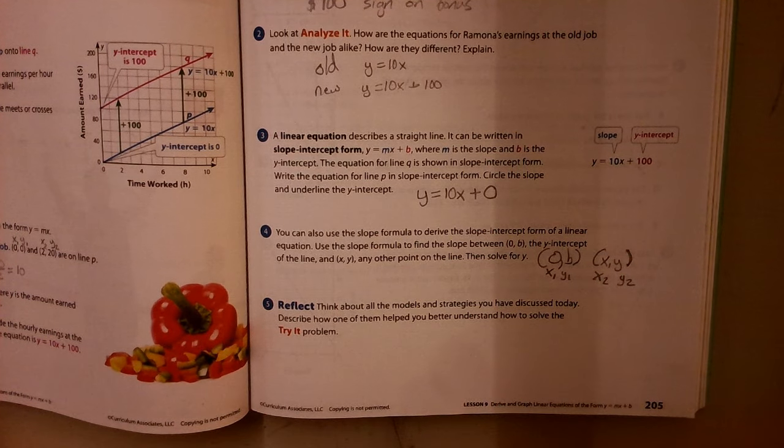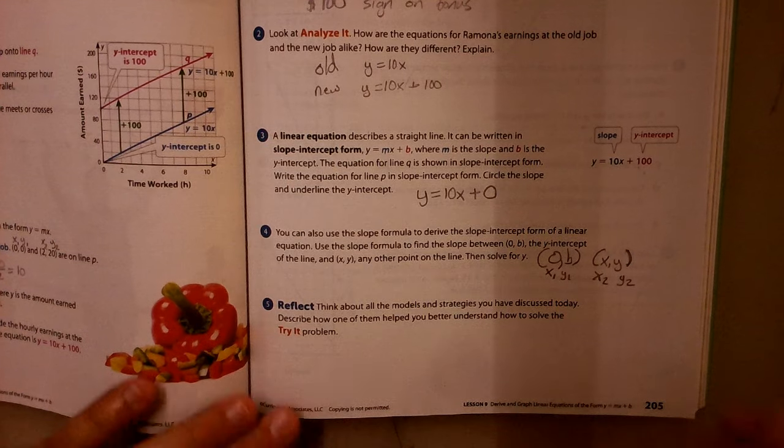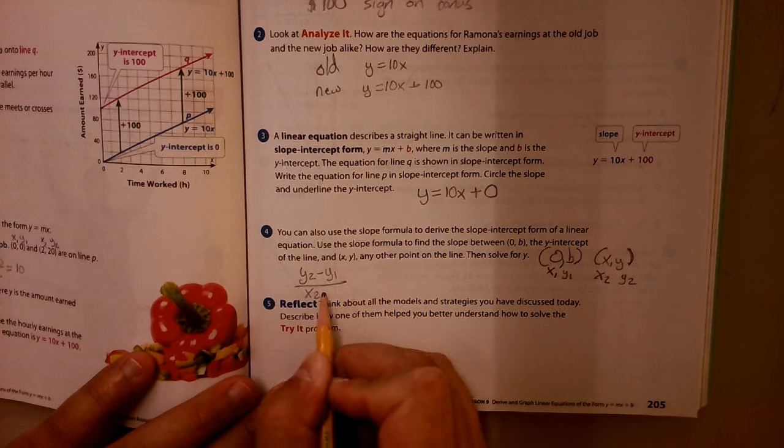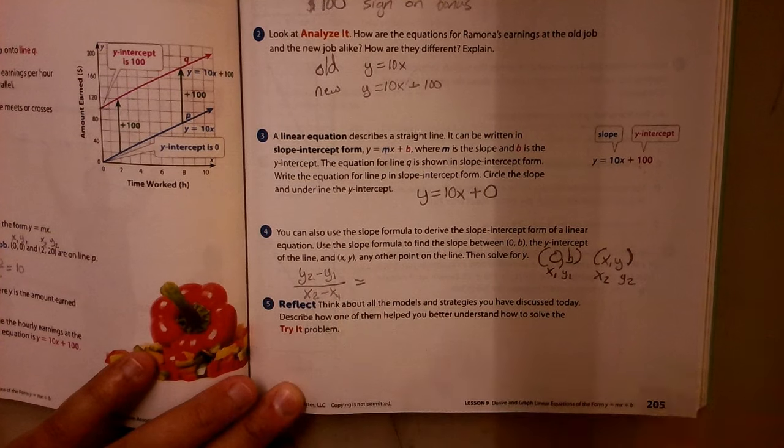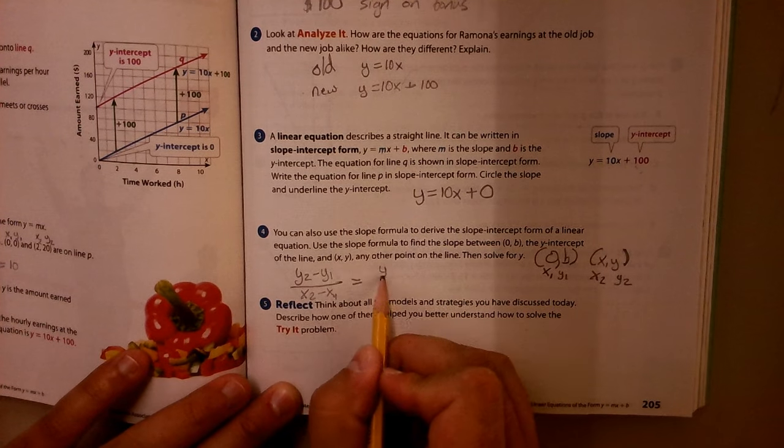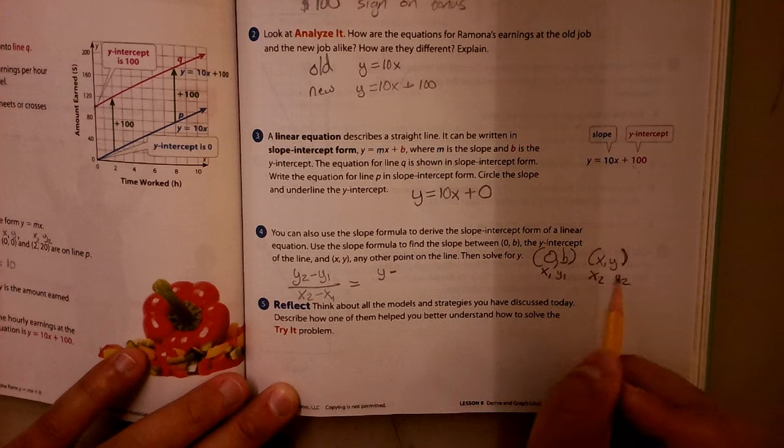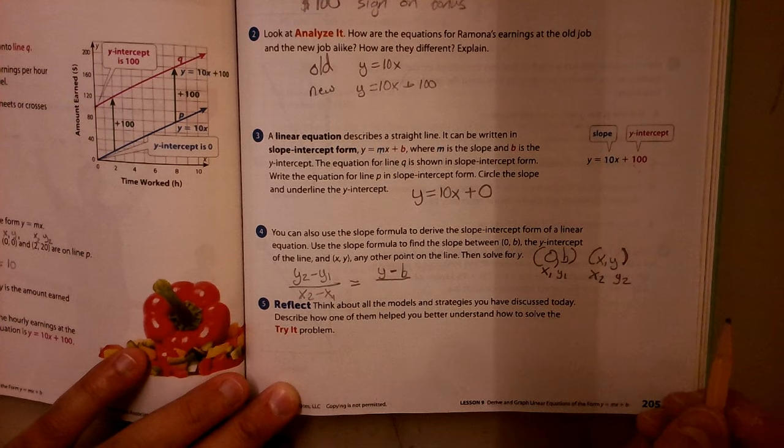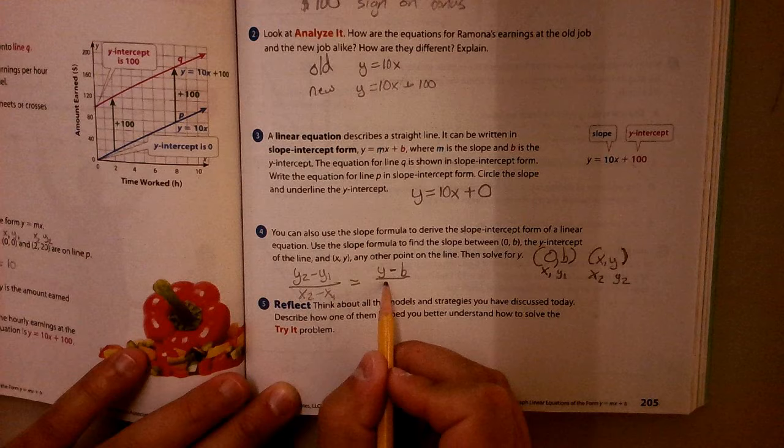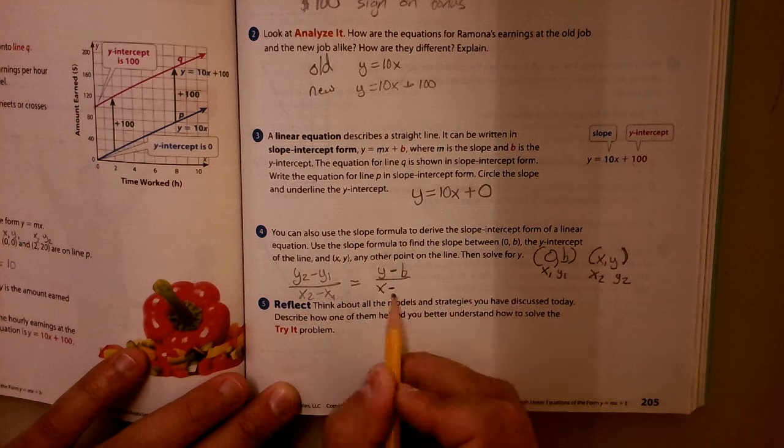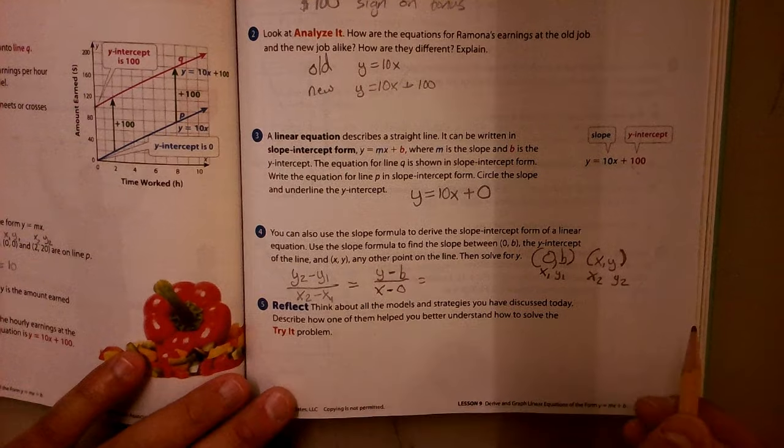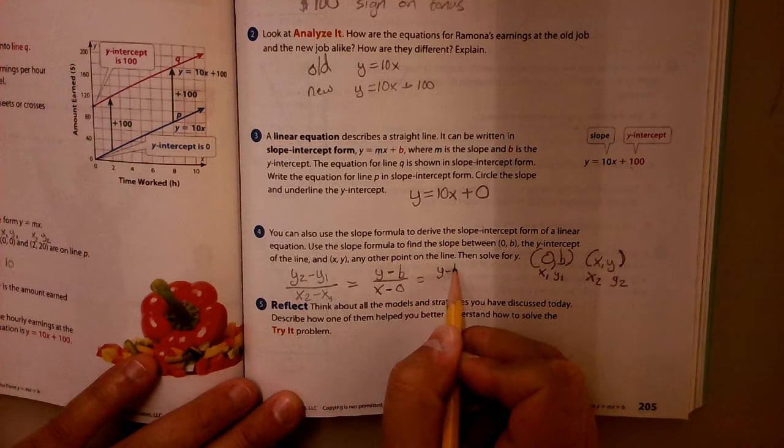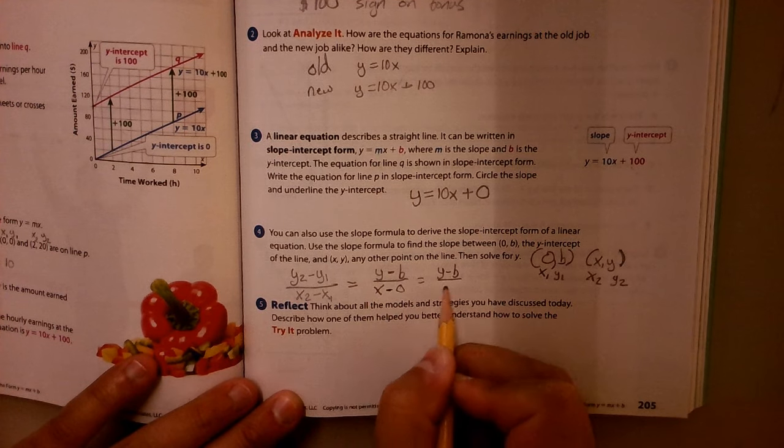So then I'm just going to put those into our slope formula, which is Y2 minus Y1 over X2 minus X1. So my Y2 is just Y, and then I have to keep the minus, and then I do my Y1, which is B. So then on the bottom, I have my X2, which is X, and then minus my X1, which is 0. So when I do that, I get M is equal to Y minus B over, and X minus 0 is just X.